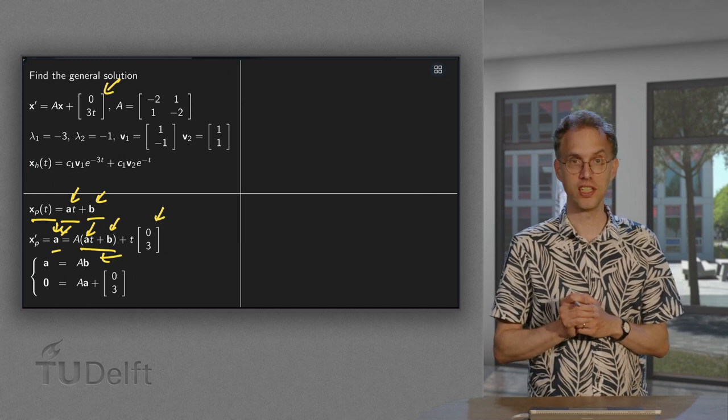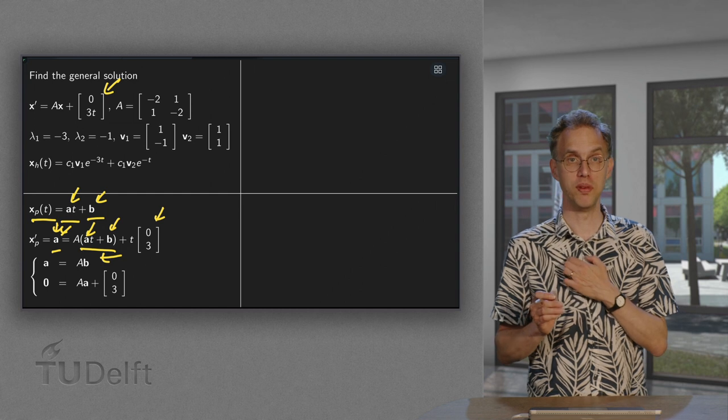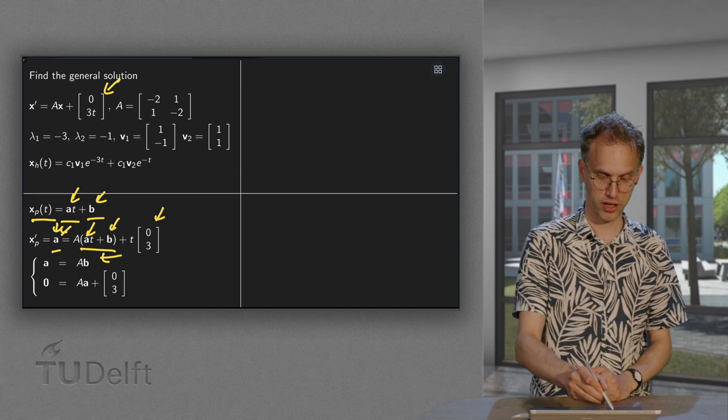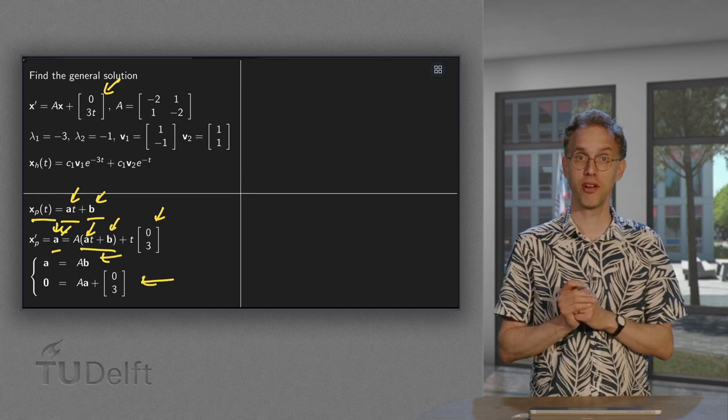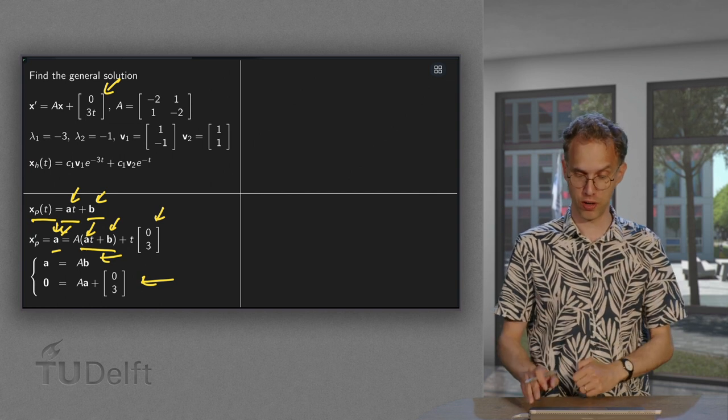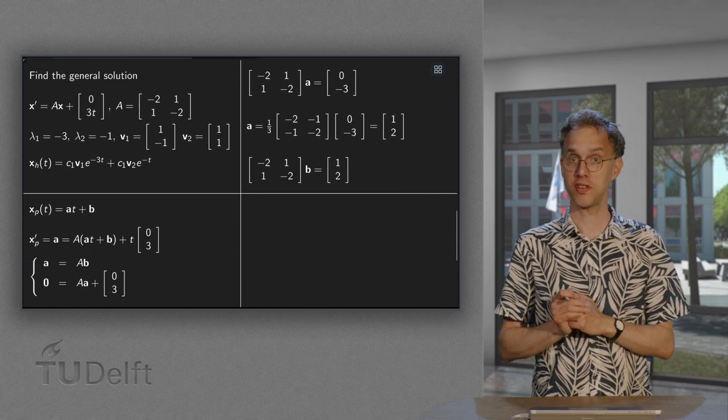Now, if we look at those two equations, we have to solve a equals A times b. But we do not know a and we also do not know b. And we have to solve 0 vector equals A times a plus (0, 3). And in the second equation, there is only one unknown vector a. So, we start with that one.